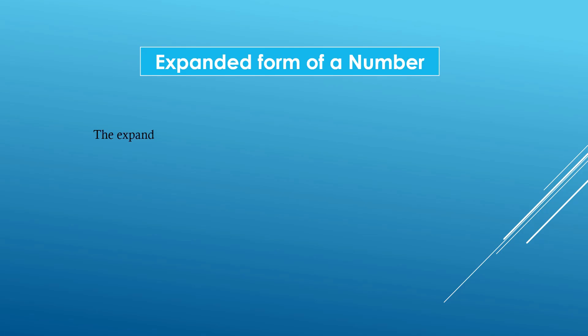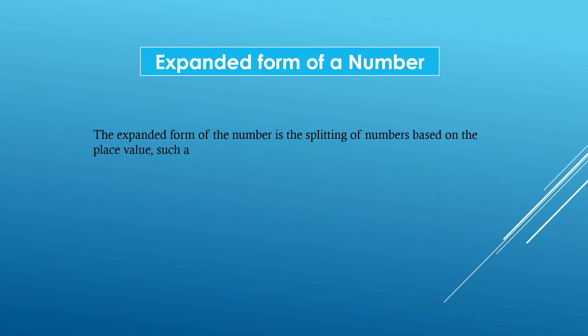The expanded form of a number is the splitting of numbers based on the place value, such as ones, tens, hundreds, thousands, ten thousands, and so on.